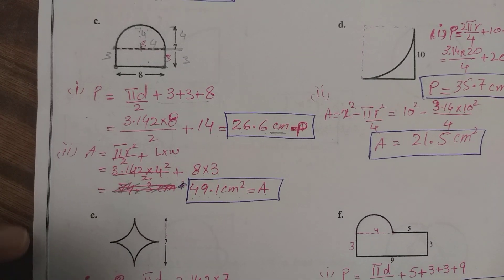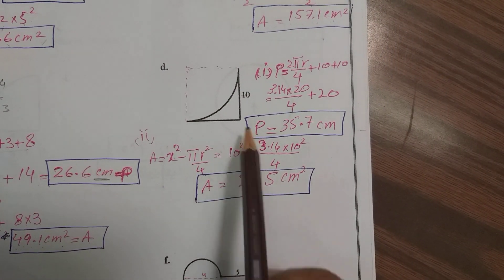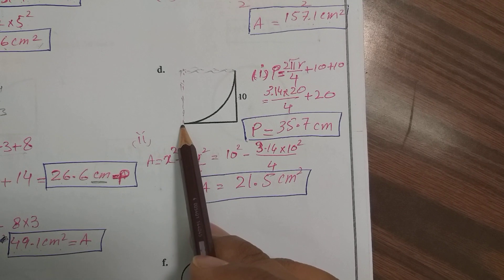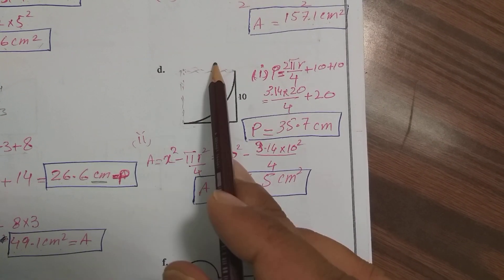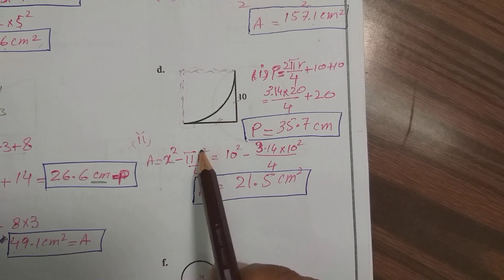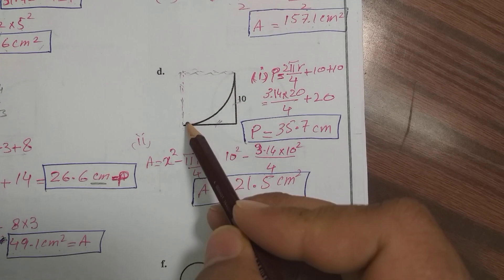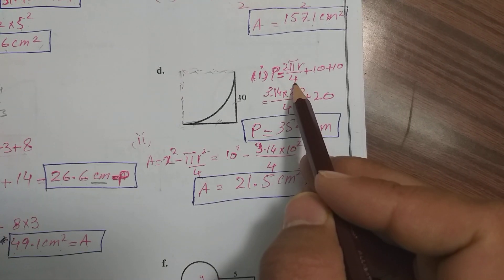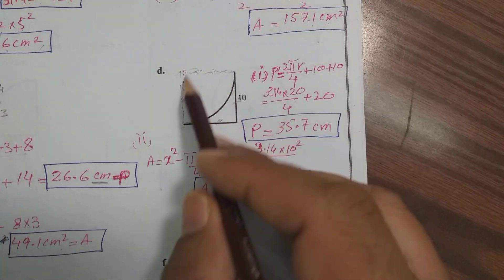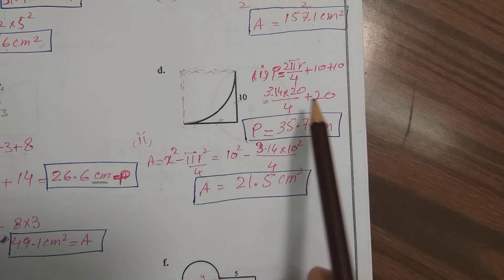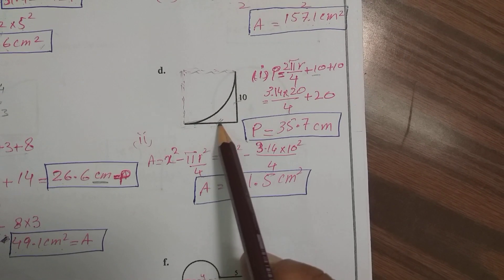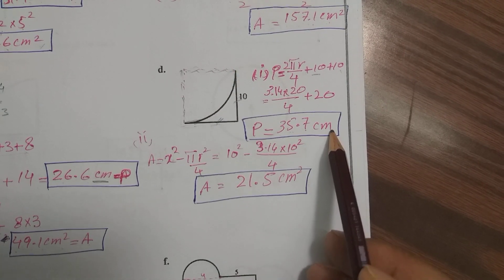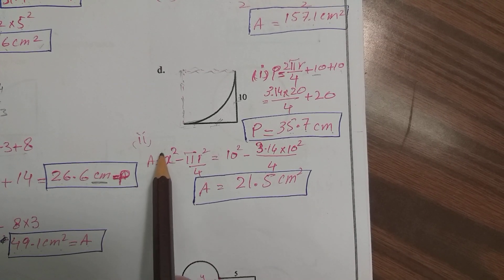In part d, if you complete the shape it becomes a square, with all sides equal to the given length. The curved part is a quarter circle, so we divide the circumference of the circle by 4 to get the quarter circle arc. We then add the two straight edges of 10 and 10. Simplifying gives the perimeter of this shape as 35.7 centimeters.